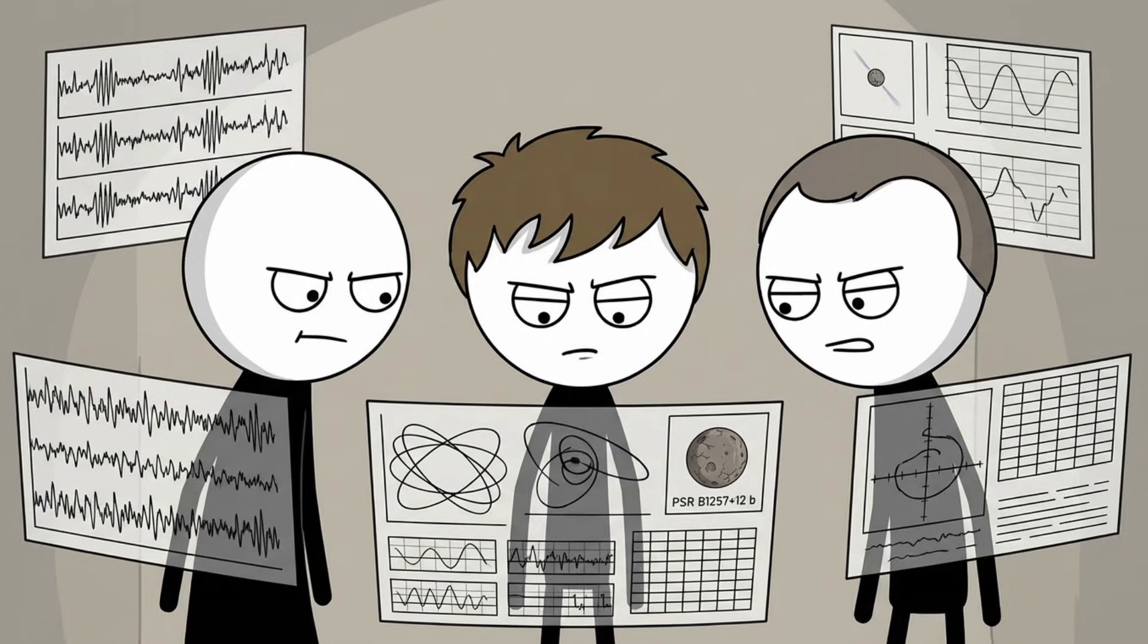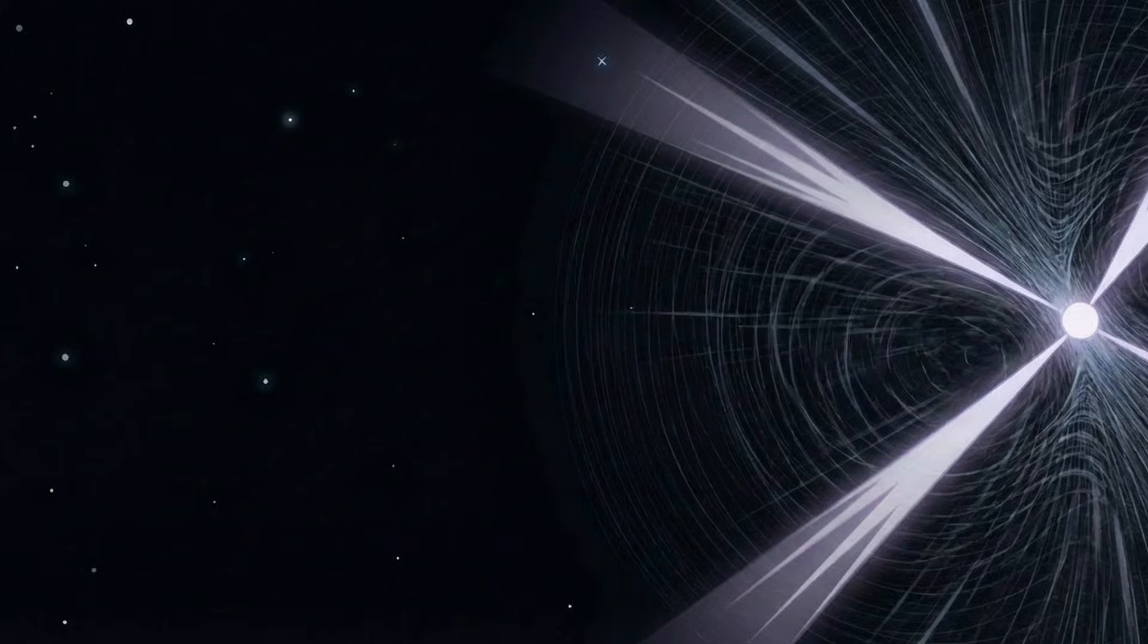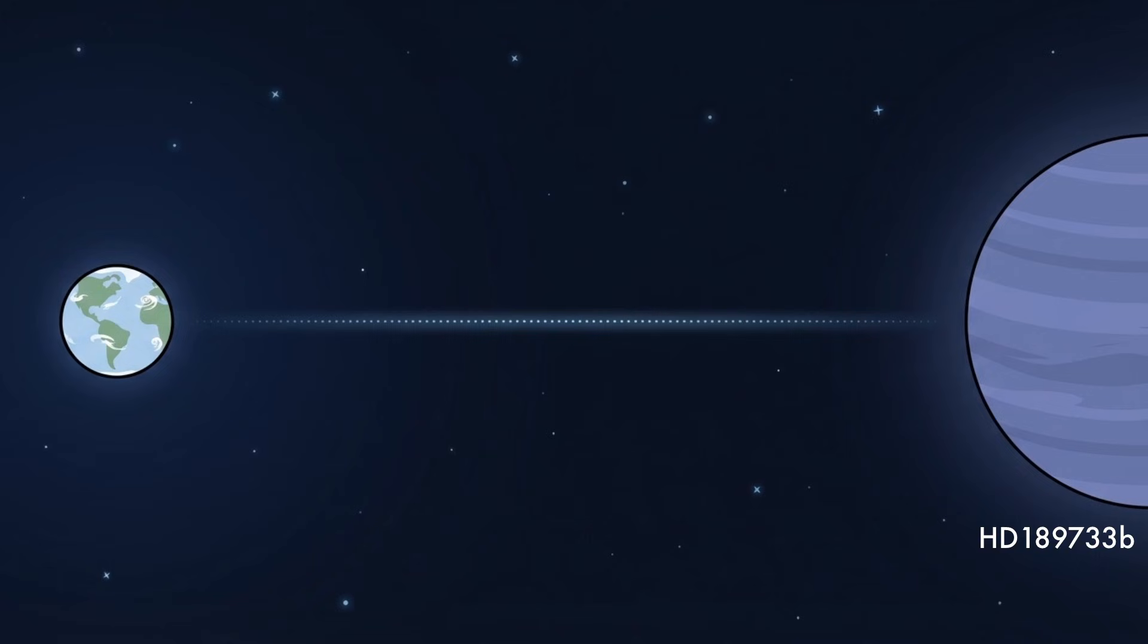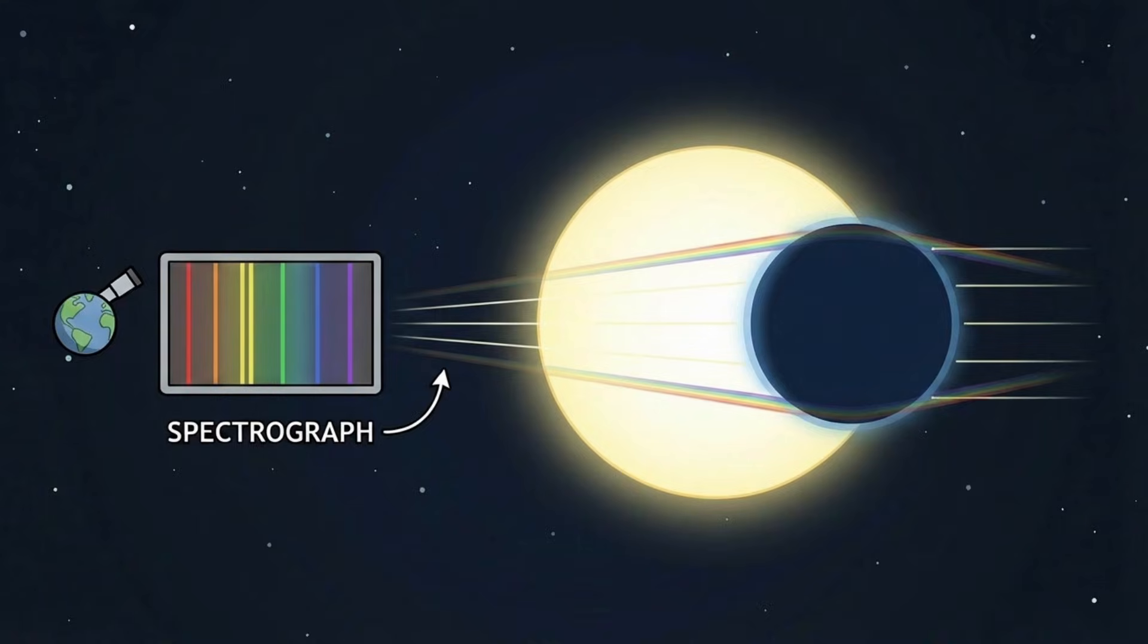HD 189-733-b, it rains glass sideways. HD 189-733-b is located about 64 light-years from Earth, close enough that astronomers can directly measure its atmosphere.